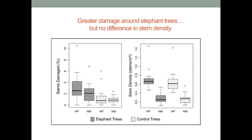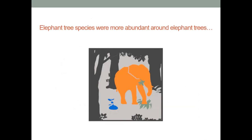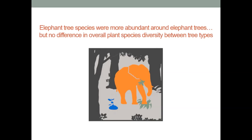Next we looked at seed dispersal and whether elephants are sowing seeds preferentially in these hot spot areas around elephant trees. We found that elephant tree species were more abundant around elephant trees — both conspecific and heterospecific. Whatever these elephants had been consuming at another tree, they were bringing into these new trees, so we had preferentially more abundance of elephant tree species in seedlings and saplings around elephant trees. But we didn't find any difference in overall plant species diversity between the tree types, so this elephant activity didn't translate to observable effects at a broader forest level.